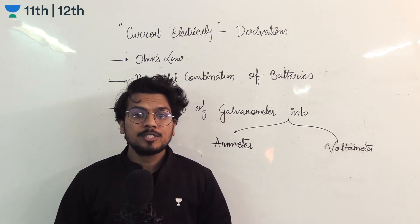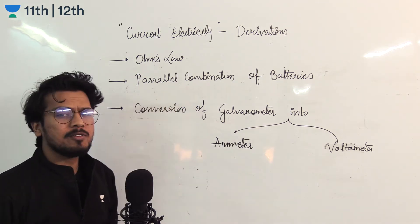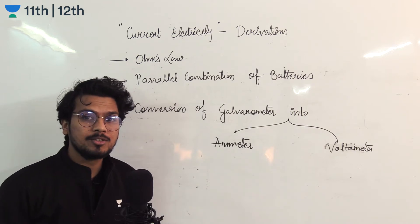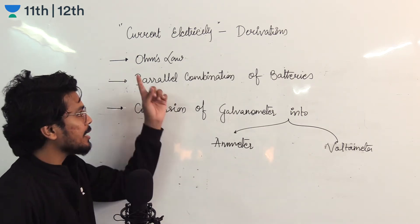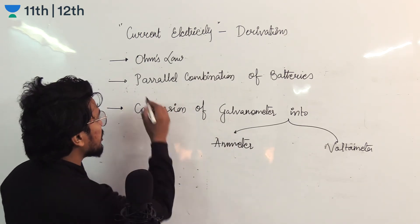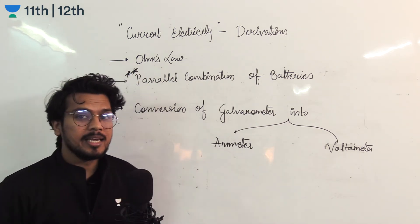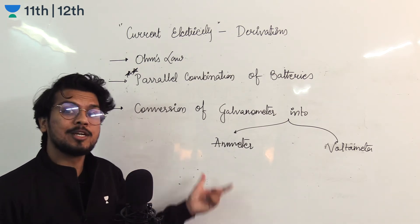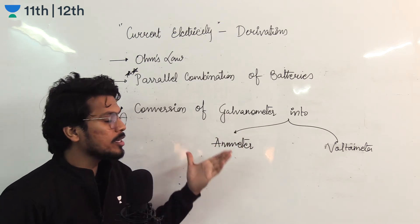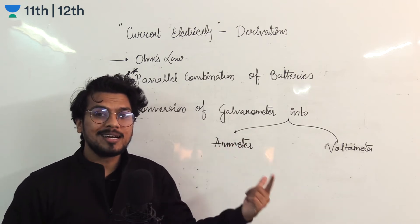The first derivation is Ohm's law, which is not very important because this chapter is mostly numerical — the probability of numericals is 90% more. But still, if derivations are asked, first is Ohm's law, then the parallel combination of batteries, which can be more important than Ohm's law. And the third and last most important one — which is also likely numerical — is the conversion of galvanometer into voltmeter or ammeter. Remember, for the potentiometer, those derivations are in the magnetism NCERT checklist, so you can refer to that.